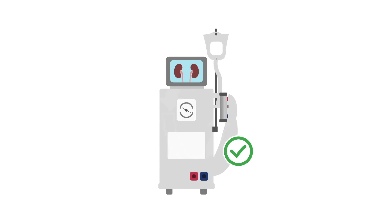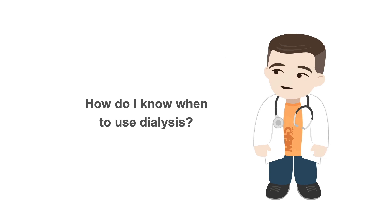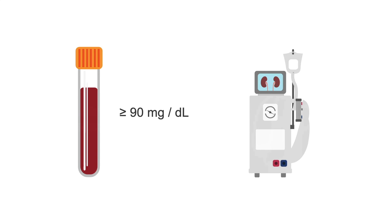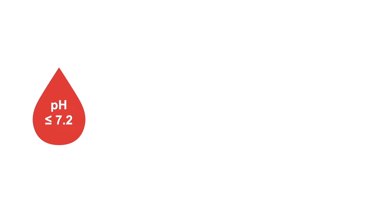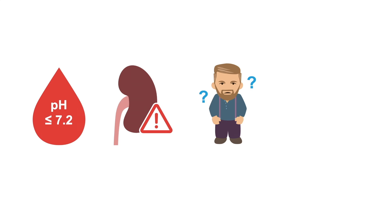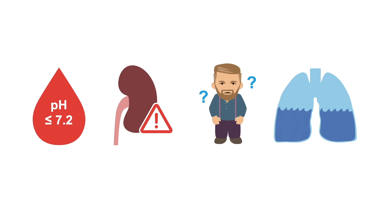Dialysis is also a very effective tool to manage the acid-base imbalance, electrolyte changes, and kidney overload. So how do you know when to use dialysis? Similar to acetaminophen, salicylate levels can be detected with a blood test. In an acute overdose, a level greater than or equal to 90 mg per deciliter, regardless of symptoms, should prompt you to start dialysis. Other reasons include a blood pH of less than or equal to 7.2, any evidence of kidney injury, any neurologic symptoms such as confusion, and fluid buildup in the lungs.